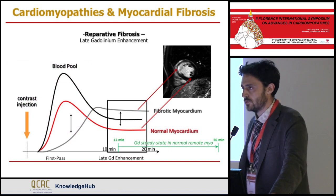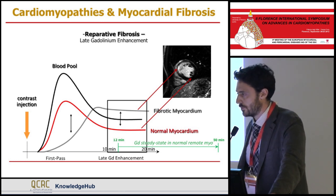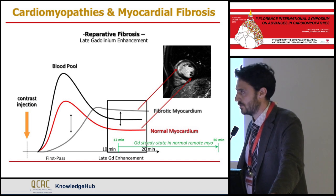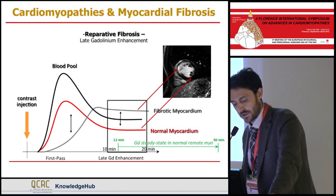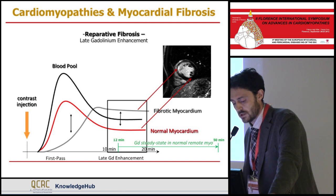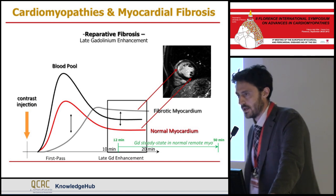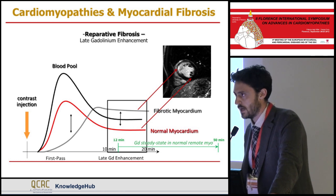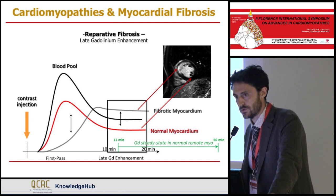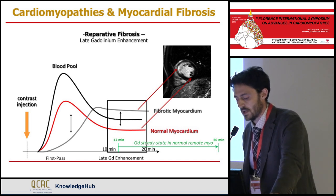As most of you probably know, we can detect gross reparative myocardial fibrosis with cardiac MRI using the late gadolinium enhancement technique, after a bolus injection of a gadolinium-based contrast agent. We see that in the fibrotic myocardium there is an impaired washing phase, but most importantly there is a delayed washout phase of gadolinium. In the fibrotic myocardium — like in this case of myocardial infarction with reparative fibrosis due to ischemic insult — the fibrotic tissue retains gadolinium.